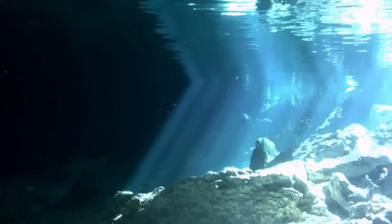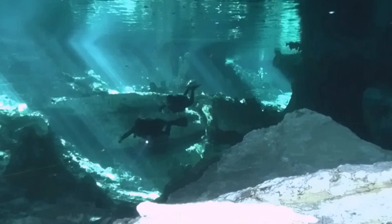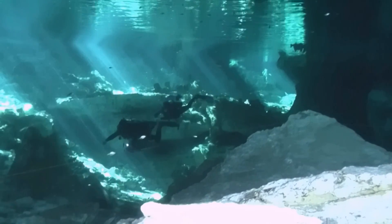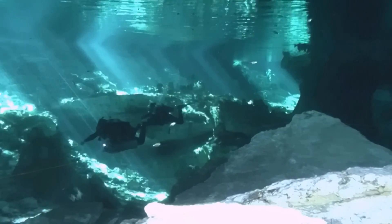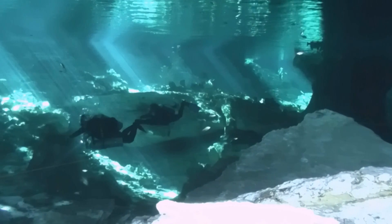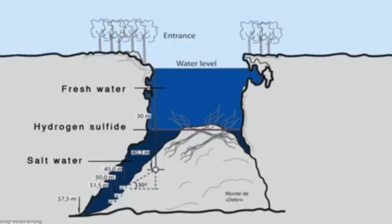Cenotes are formed from a geomorphologic process where time and space, the porosity and rock features, the weather, temperature, and mixture of fresh and salt water all play a part in forming these structures.